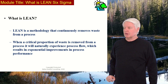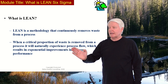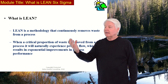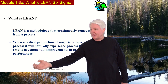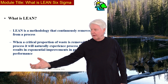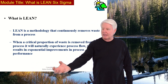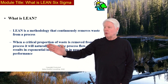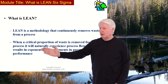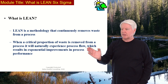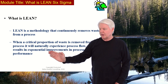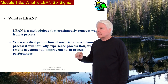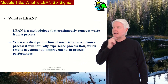When a critical proportion of waste is removed from a process, it will naturally experience process flow. That is very important. If you keep removing waste, eventually the product just moves continuously through the process. When a critical proportion of waste is removed, it will naturally experience process flow, which results in exponential improvements in process performance.